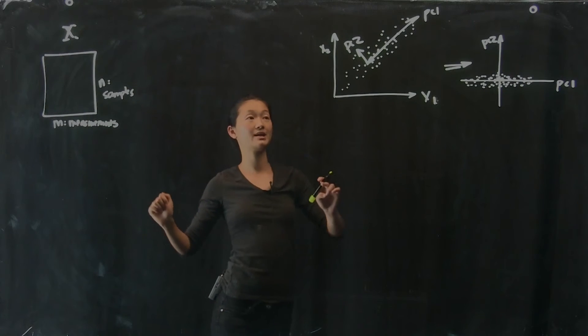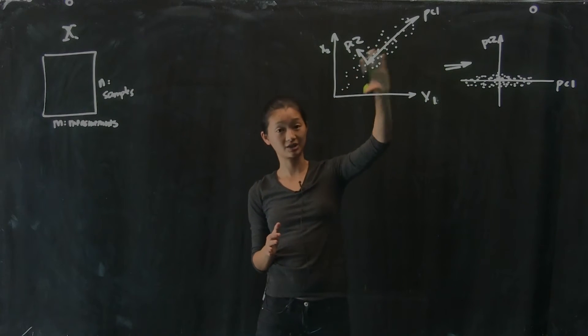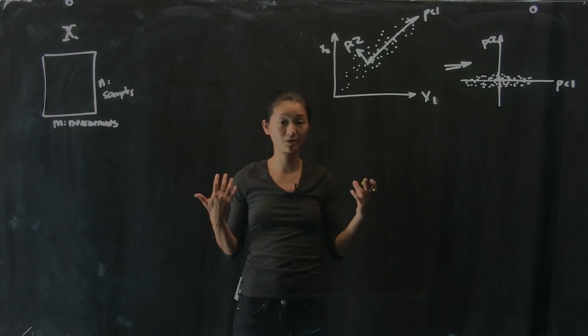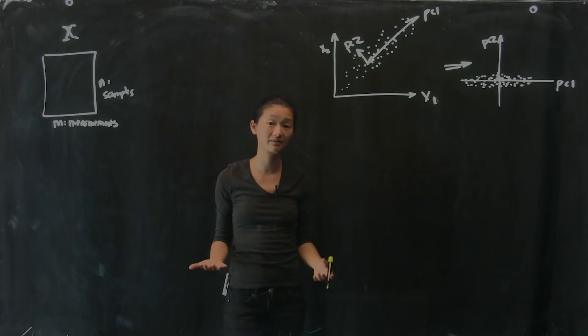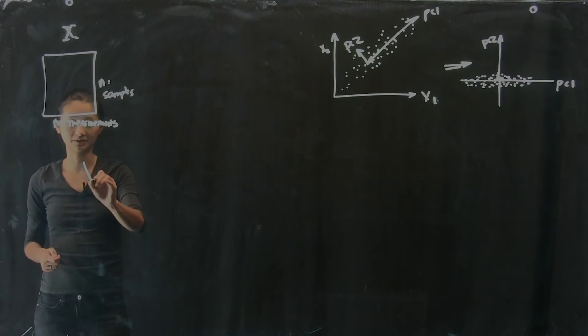But let's go back now into the high-dimensional abstraction of data that has M measurements instead of just two. So the way that we can quantify this transformation and try to solve for the direction where these principal components that explain most of the variance data lies is by computing an object called the covariance matrix of my data matrix X.